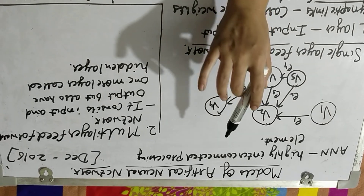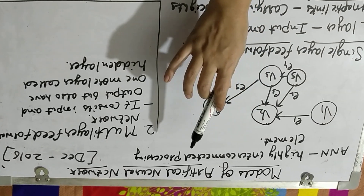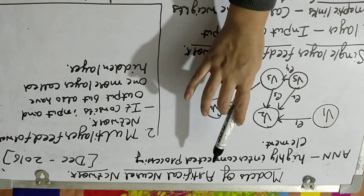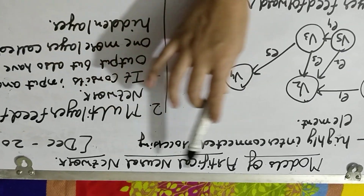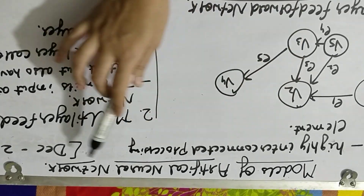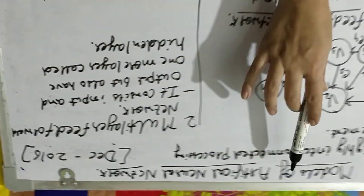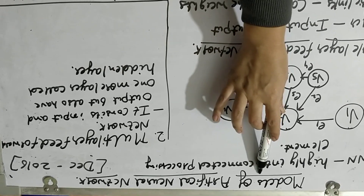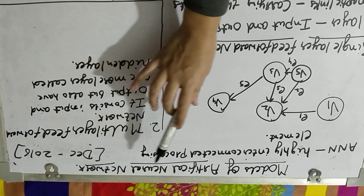So friends, in this lecture we are going to cover another important topic of artificial neural network, which came out in December 2016 as a name of models of artificial neural network.